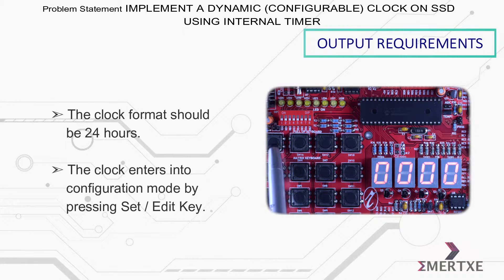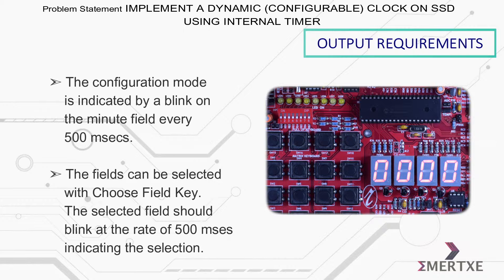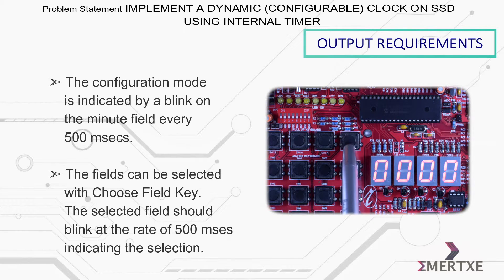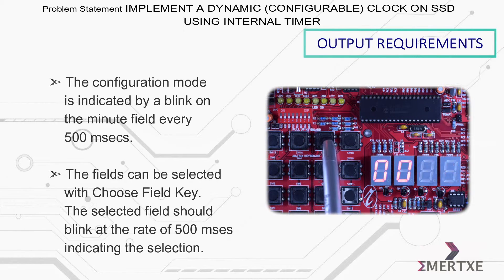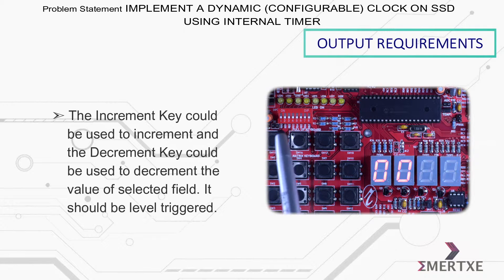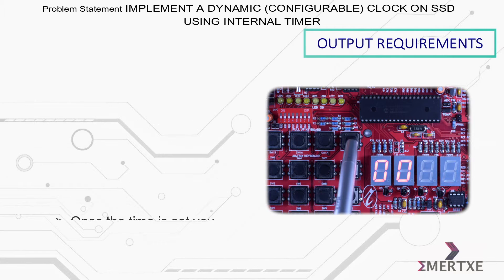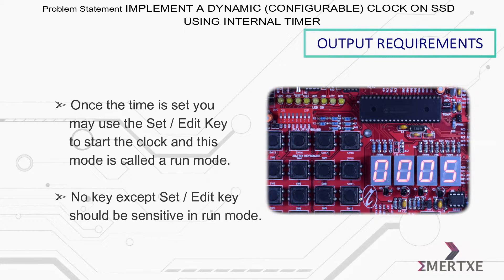The clock enters into configuration mode by pressing the set or edit key. The configuration mode is indicated by a blink on the minute field every 500 milliseconds. The fields can be selected with the choose field key, and the selected field should blink at 500 milliseconds indicating the selection. The increment key increments and the decrement key decrements the value of the selected field; it should be level triggered.